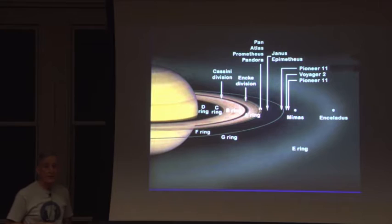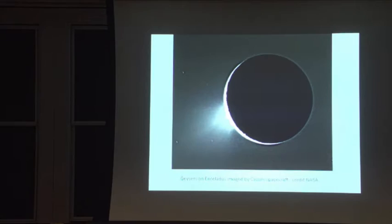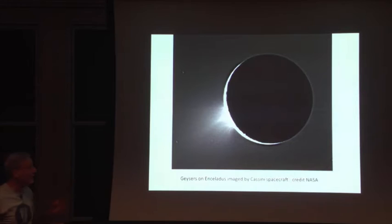And Enceladus has been known since the Voyager days to be in the midst of a ring of micron-sized particles, which we now know are ice, actually salty ice. In some cases, which are coming out of Enceladus. I'll introduce you to the observations. I'm not going to spend a very long time on these.